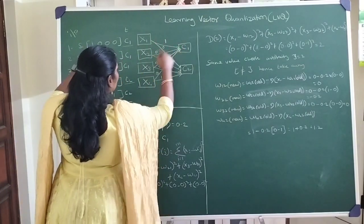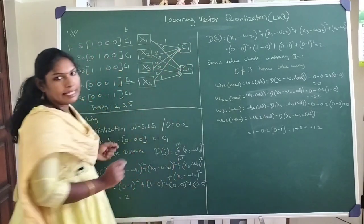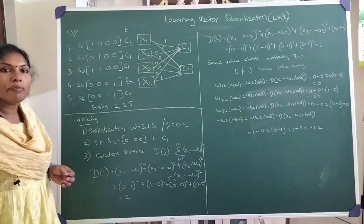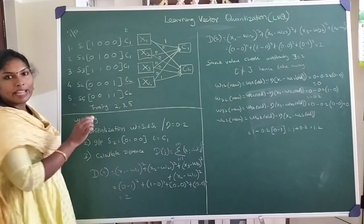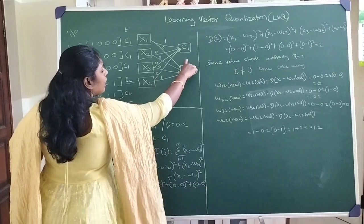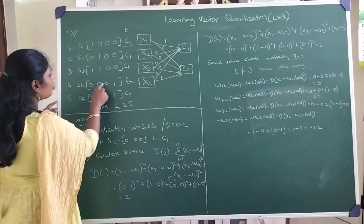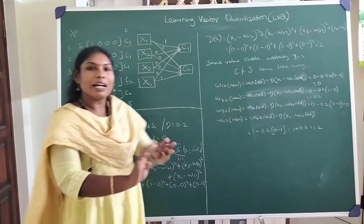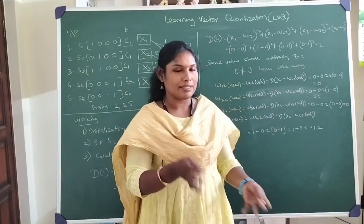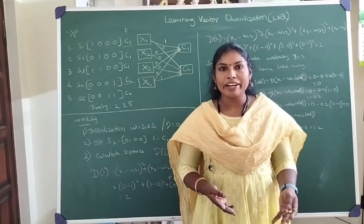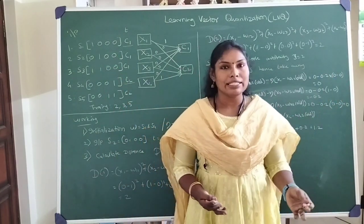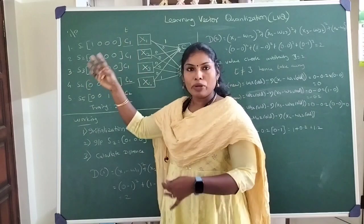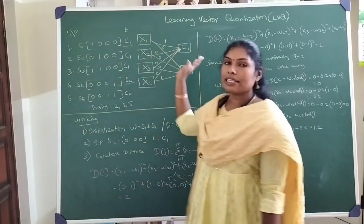The weight vector for cluster 1 is [1, 0, 0, 0]. For cluster 2, we take S4 and assign its weight vector as [0, 0, 0, 1]. This is a form of learning where we take a training pattern and assign it as a weight vector directly — similar to pattern association networks. For each cluster, we take one sample input pattern and assign it as the weight vector.